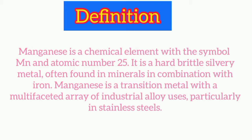Hello everyone, welcome to my channel. In today's video we will learn about the definition, properties, and uses of manganese. Manganese is a chemical element with the symbol Mn and atomic number 25. It is a hard, brittle, silvery metal often found in minerals in combination with iron. Manganese is a transition metal with a multifaceted array of industrial alloy uses.